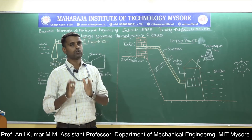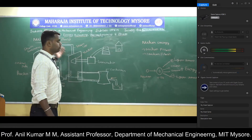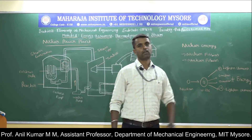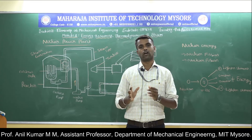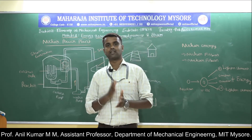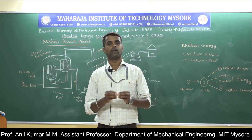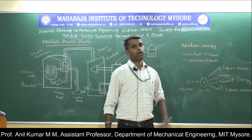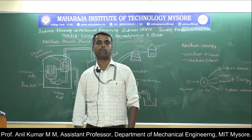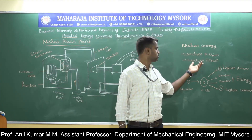Water energy is the energy associated with the flowing of water, also called hydro energy. Next, we will discuss one more energy harvesting technique: the nuclear power plant. Nuclear energy is the energy associated with the nuclei of an atom — specifically, the energy released by splitting or fusing of atomic nuclei. That energy can be used to produce electrical energy, and for that the nuclear power plant is used. Nuclear energy is produced in two ways: nuclear fission and nuclear fusion.